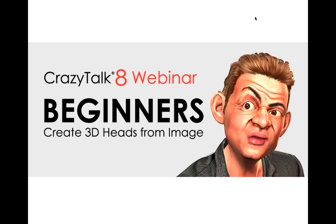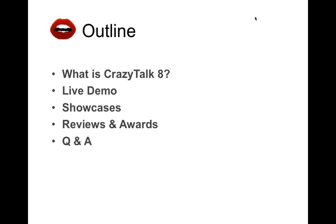I'm not going to go into animation details — we'll save that for another webinar. No expressions, no export. I'm only going to show you tips and tricks to generating a really good 3D head from one single image. With CrazyTalk you can use up to two images — a front and a side — but today I'll focus only on the front image. The outline: CrazyTalk 8 overview, live demo, showcases, reviews and awards, then Q&A.